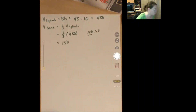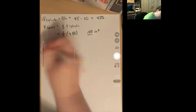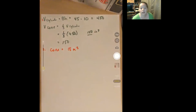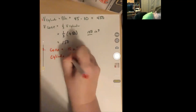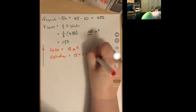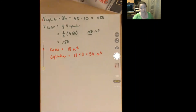Number two: a cone and a cylinder have congruent heights and bases. The volume of the cone is 18 meters cubed. What is the volume of the cylinder? Remember, you can fit three cones into the cylinder. So the cylinder's volume is 18 times 3, because you can fit three cones inside it. That gives 54 meters cubed. Multiplying the volume of the cone by three gives the volume of the cylinder.